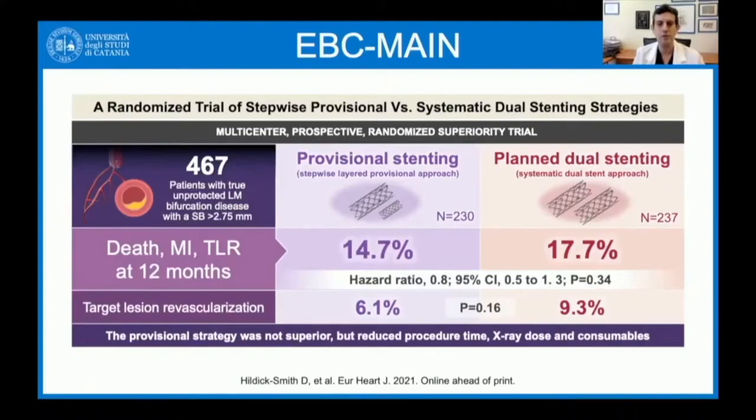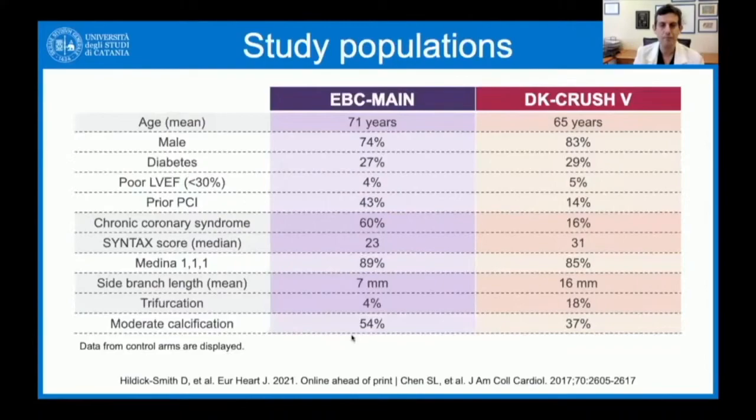The hazard ratio was 0.8 and the p-value was not significant at 0.34. Target lesion revascularization was also not significantly different between groups, but numerically favored provisional stenting: 6.1% versus 9.3%. The provisional strategy was not superior. However, secondary outcomes such as procedure time, x-ray dose, and consumables were in favor of the simpler provisional approach.